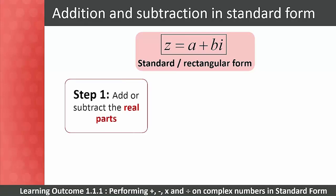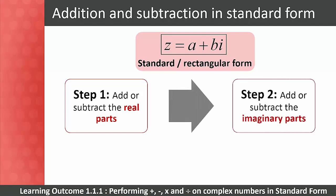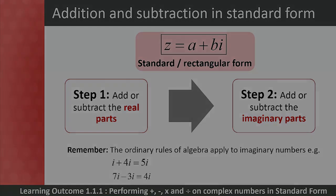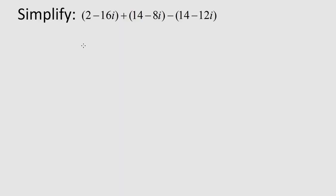Step 1: add or subtract the real parts. Step 2: add or subtract the imaginary parts. Remember that the ordinary rules of algebra apply to imaginary numbers — for example, i plus 4i equals 5i, and 7i minus 3i equals 4i. Let's now take a look at a video example of this.